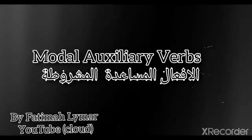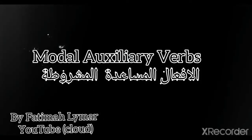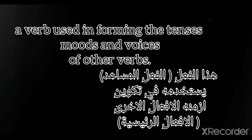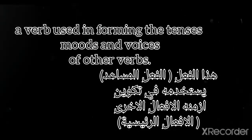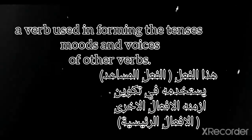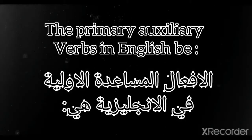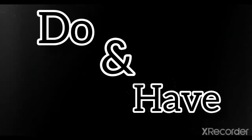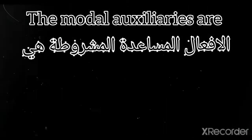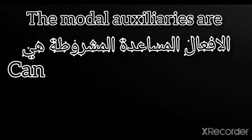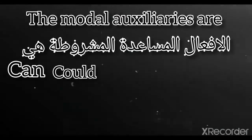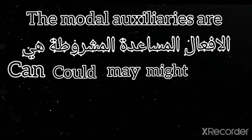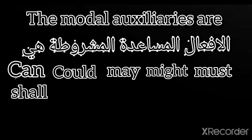Modal auxiliary verbs: a verb used in forming the tenses, moods, and voices of other verbs. The primary auxiliary verbs in English are be, do, and have. The modal auxiliaries are can, could, may, might, must, shall, and should.